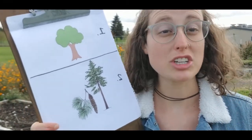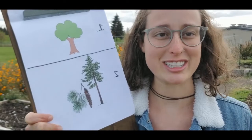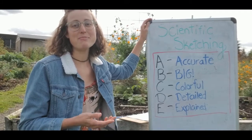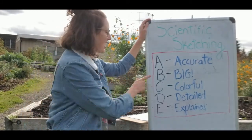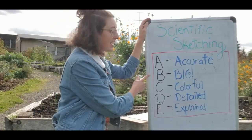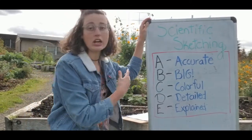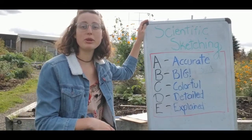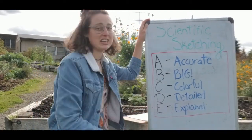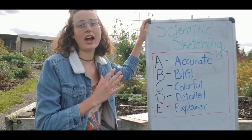Think about it like a scientist. If you wanted to show someone a plant that you saw without having to bring it back to the lab, you would create a scientific sketch. Whenever I'm creating a scientific sketch it helps me to remember A, B, C, D, E. A as in accurate, which means your drawing should represent what the object actually looks like. B as in big, so there's room to add lots of details. C as in colorful, because by adding color you can communicate more information. D as in detailed, and E as in explained, which means you can write notes or questions on your drawing to add more information.